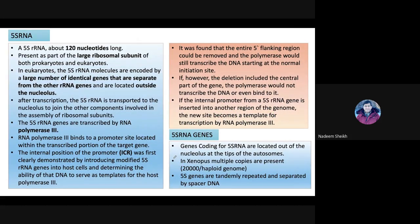There are two types of ribosomal RNA subunits. One is 5S RNA, and the other is standard ribosomal RNA transcribed in the nucleolus. To avoid confusion: 5S ribosomal RNA is not transcribed in the nucleolus. It is transcribed outside the nucleolus.